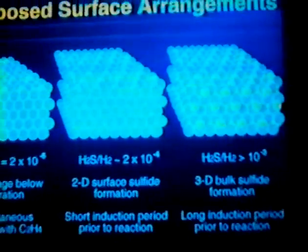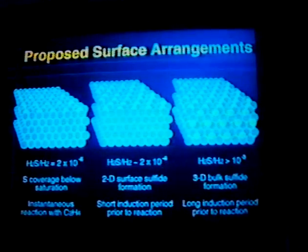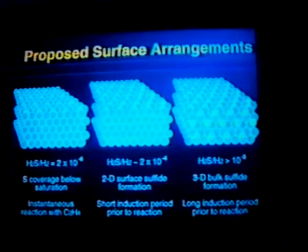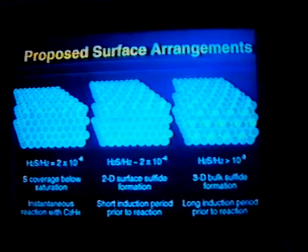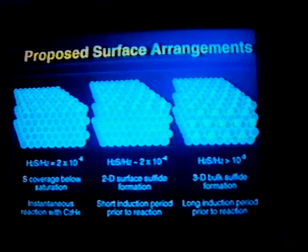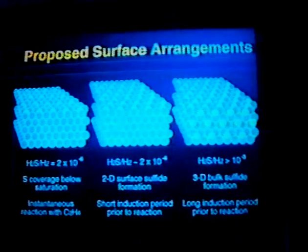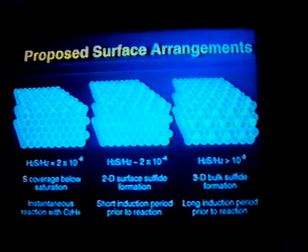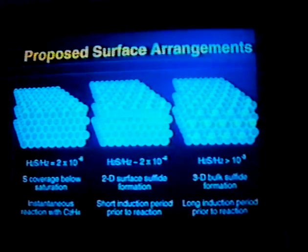At fairly low sulfur coverage — well below saturation — where we're getting instantaneous reaction with ethylene, we have the structure shown on the far left. As the metal is exposed to higher and higher levels of sulfur, we go through a phase where we have a two-dimensional surface sulfide; it's still surface, and that is the condition where there would be a short induction period to release weakly held sulfur to reach the activated state. At high levels of sulfur, we make a three-dimensional bulk sulfide. This conclusion is supported by in-situ electron diffraction: the first two species show only metallic state, while systems treated at high sulfur levels show three-dimensional bulk sulfide formation. In many cases you can't run the reaction long enough to get back to the activated state.